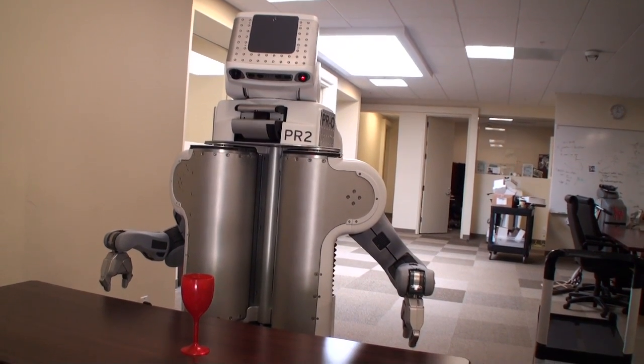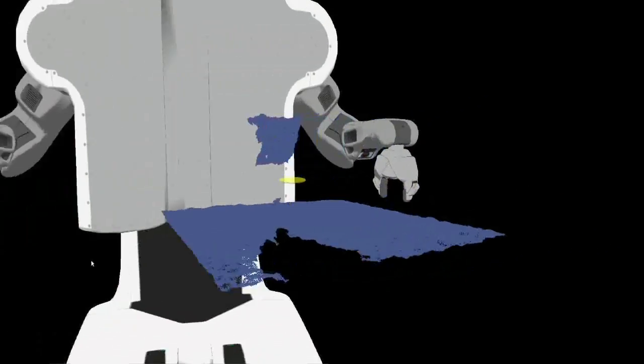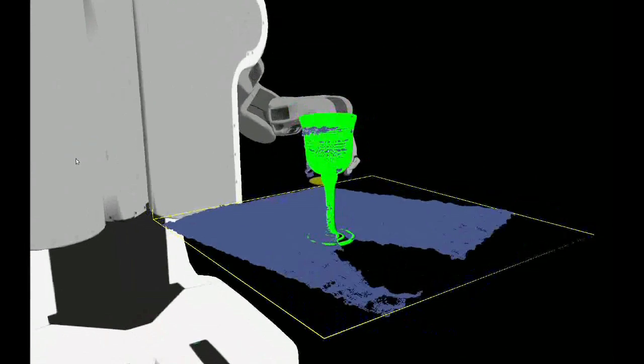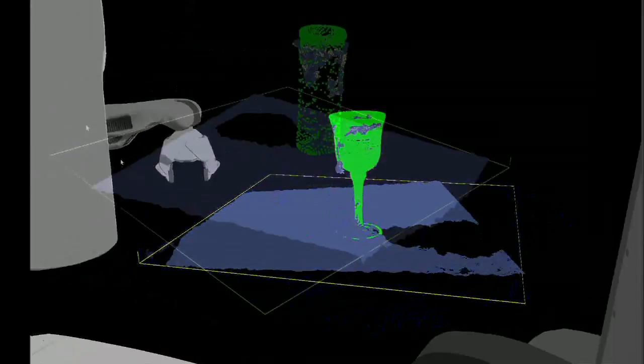When a robot sees this wine glass, limited and imprecise sensory feedback can lead to a high level of uncertainty, and the robot might not be sure what object it is looking at. It might confuse it for a glass of a different type, or even for an altogether different object like a tennis ball can.